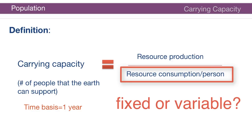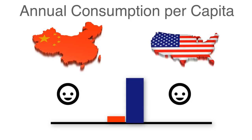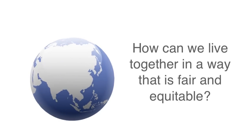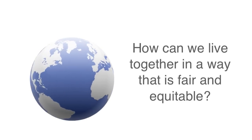One key question is whether resource consumption per person is a fixed value or does it vary. For example, citizens of China consume a certain amount per person — how does that compare to citizens of the United States? If US citizens are not more alive, why is their resource consumption higher? This reveals an important trend: the higher the affluence, the higher the resource consumption. But are there alternatives? How can we live together in a way that results in fair and equitable consumption of resources for all peoples on the planet? This is the central question of sustainability.